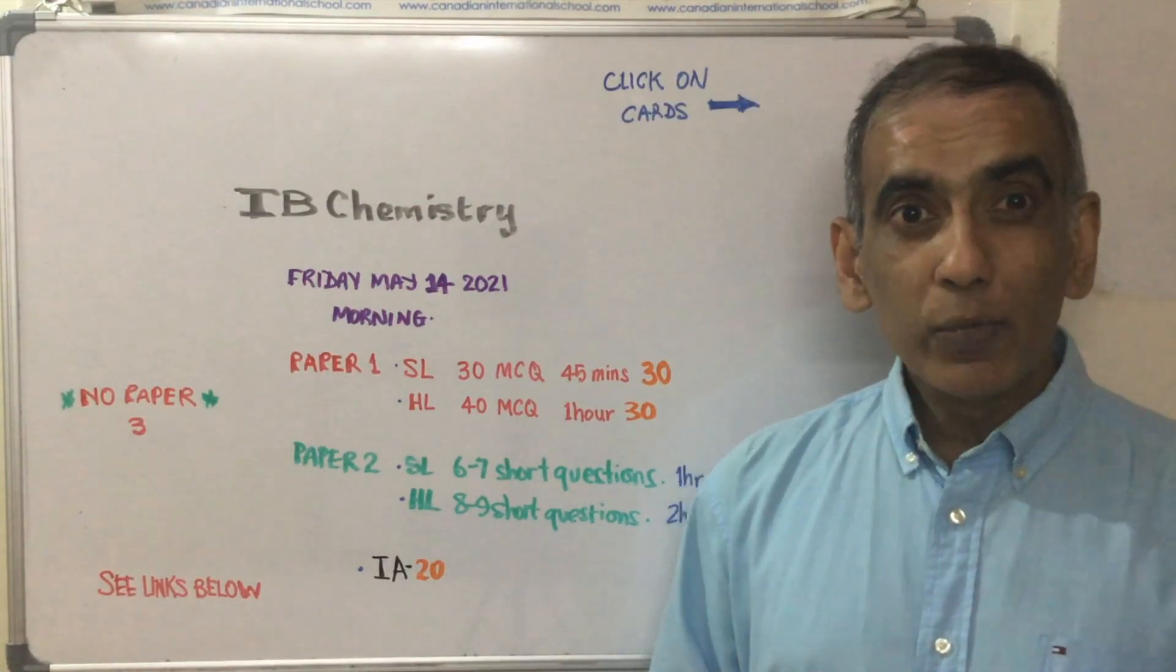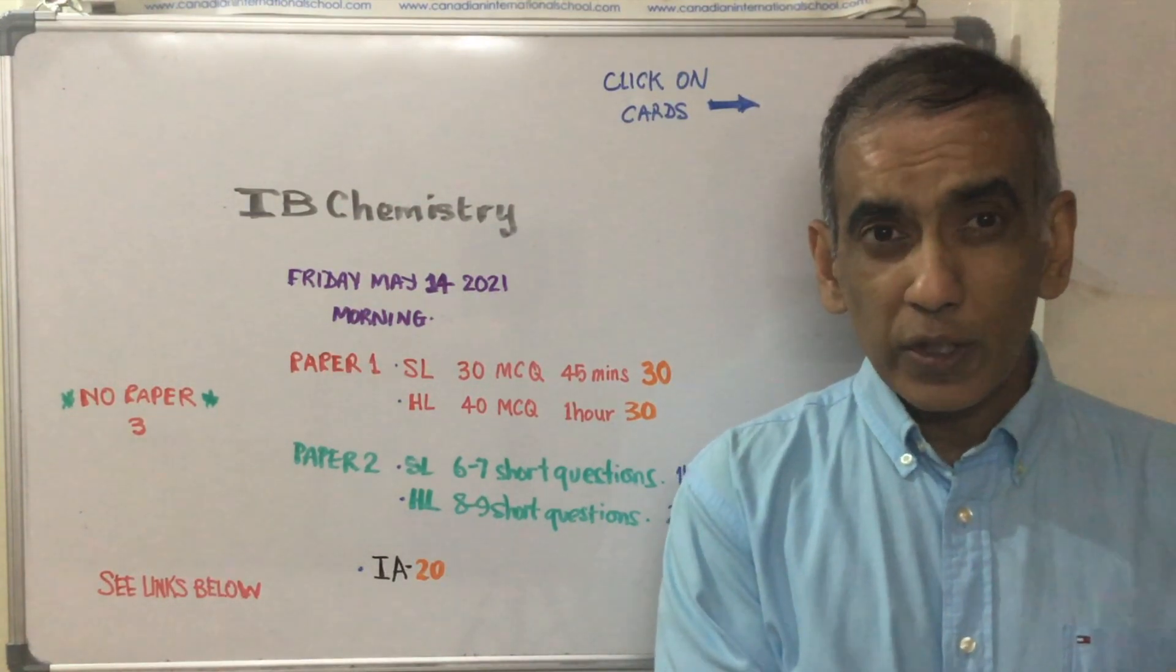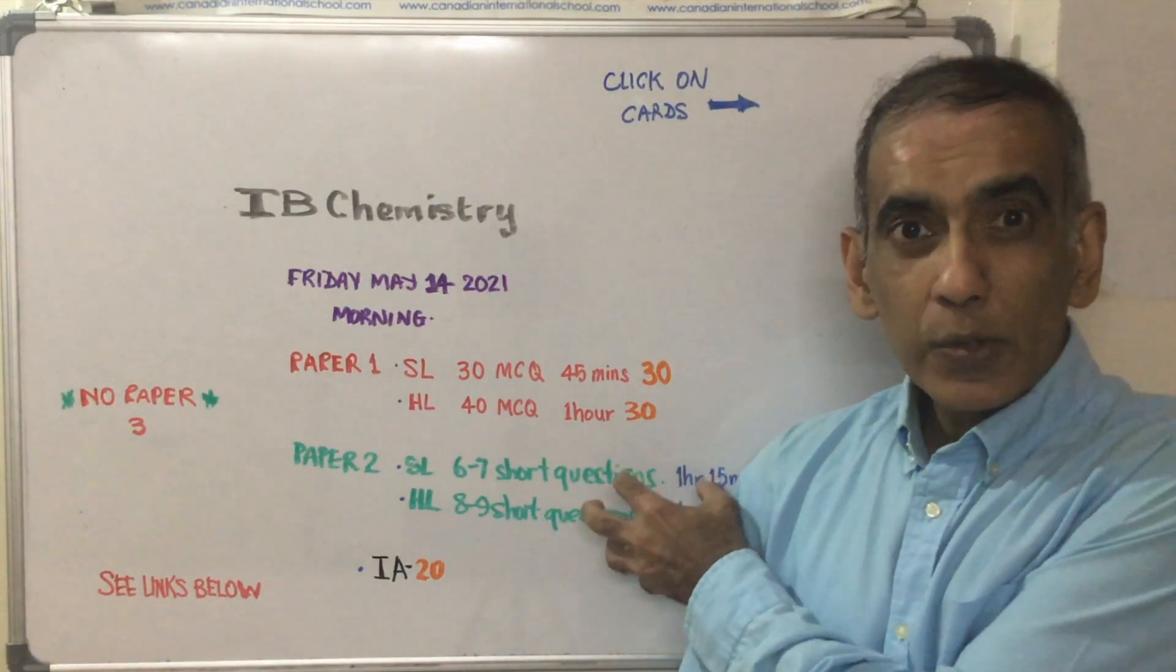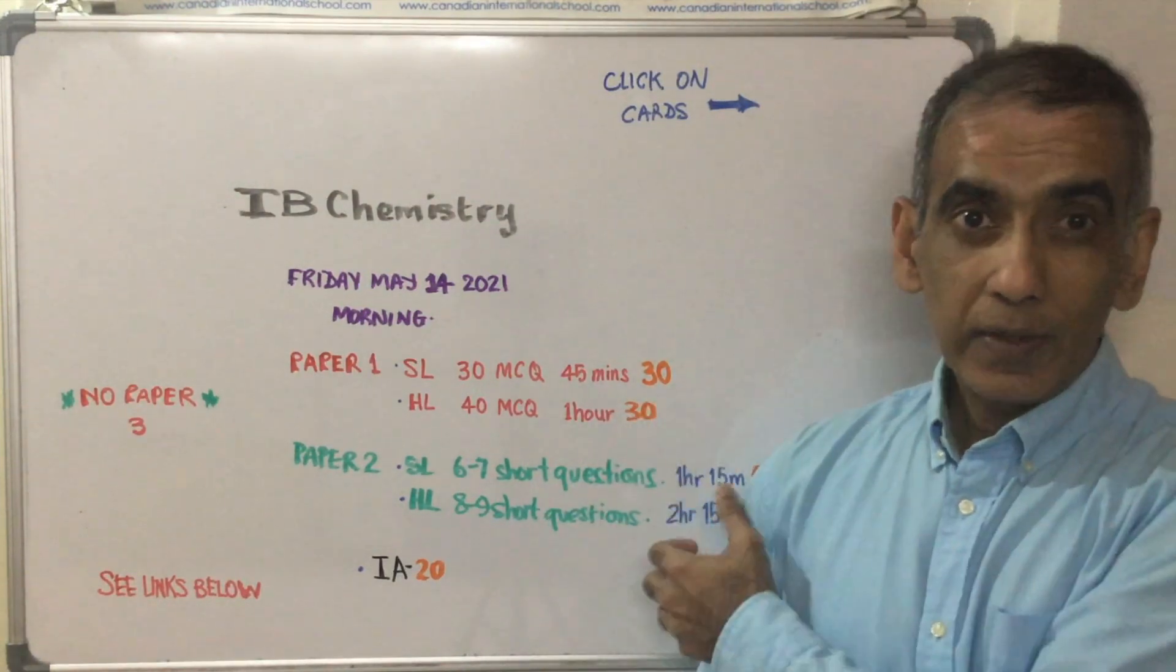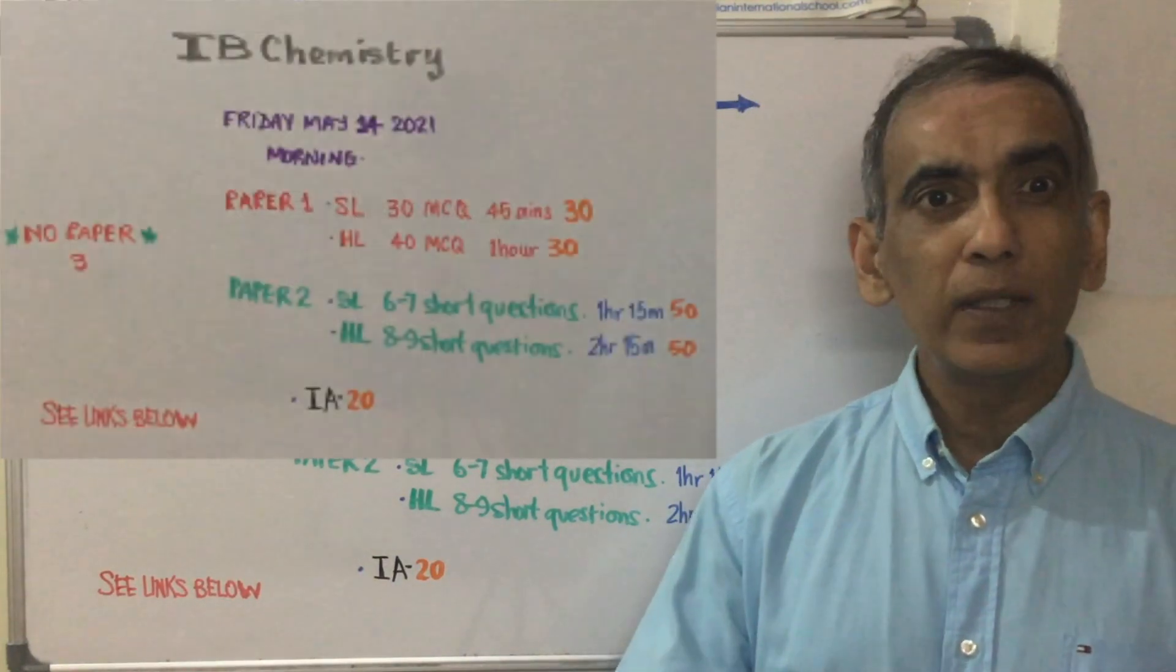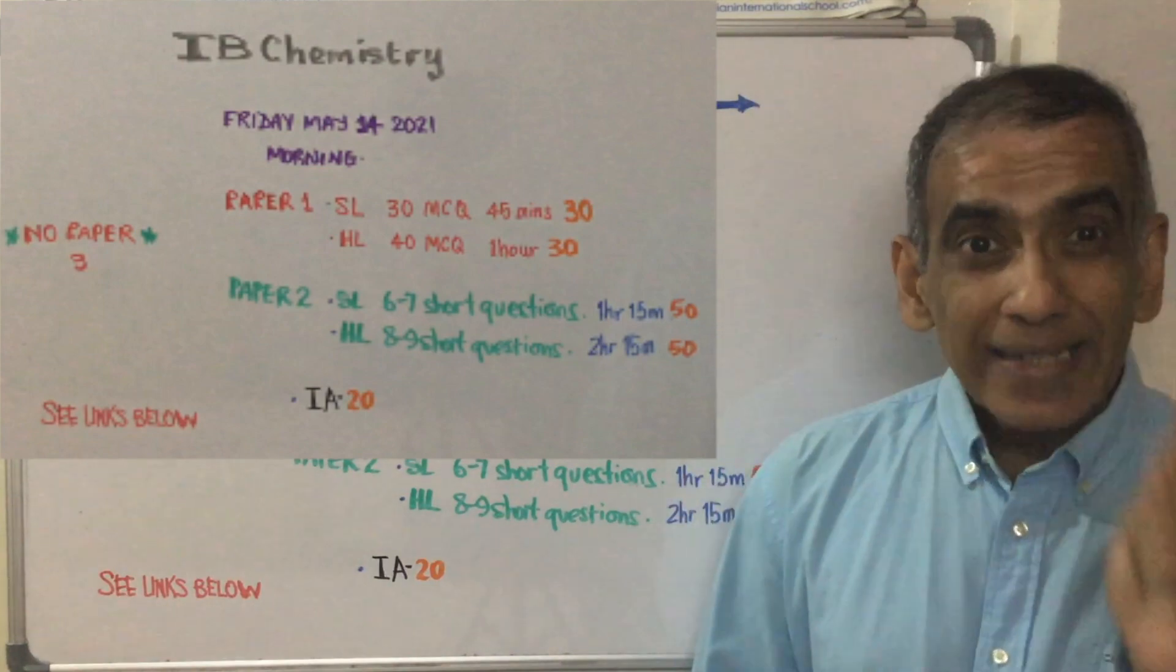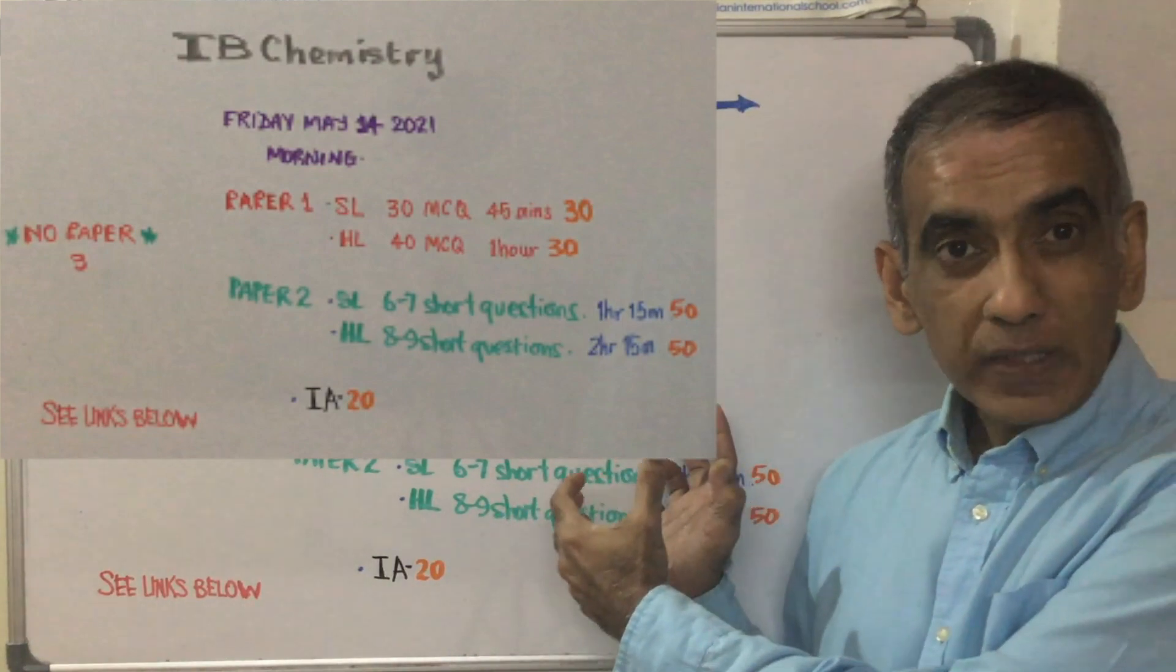SL students, you then move on to your paper 2 with about six or seven structured questions, problems, diagrams, various things, not a whole lot of writing though. That's going to be scored out of 50 and it would carry a weight of 50 percent. HL students, you also have a number of numerical problems, diagrams, tables, graphs to work with and you would be scored out of 90 and your weight for your paper will be 50 percent.